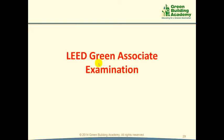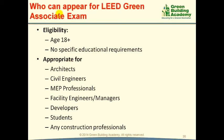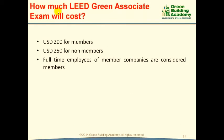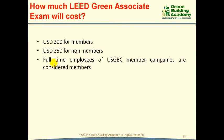Who can appear for the LEED Green Associate examination? There is no specific eligibility requirement set by the US Green Building Council except that the candidate should be at least 18 years old. LEED credentials are appropriate for Architects, Civil Engineers, Building Service Engineers, Facility Engineers, Facility Managers, Developers, or students in any of these disciplines. The exam fee is $200 for members and $250 for non-members. Full-time employees of US Green Building Council member companies are considered members and can avail a $50 discount.